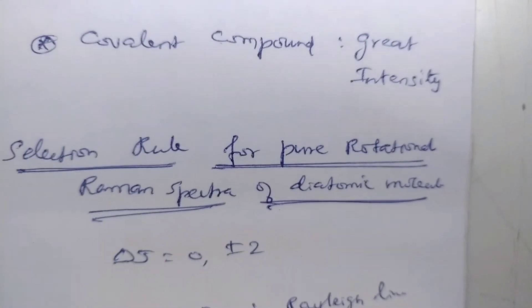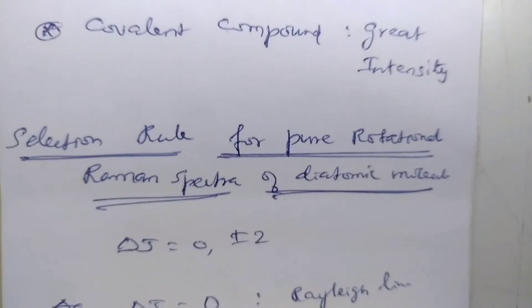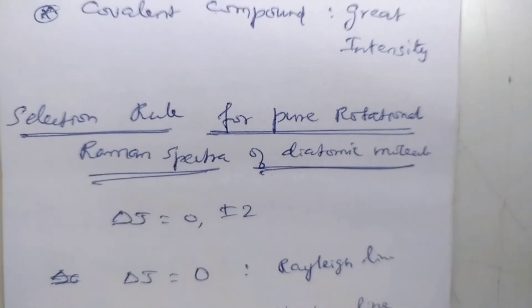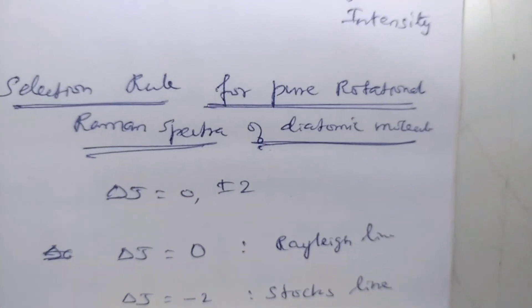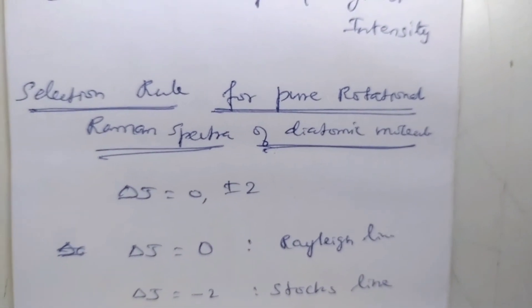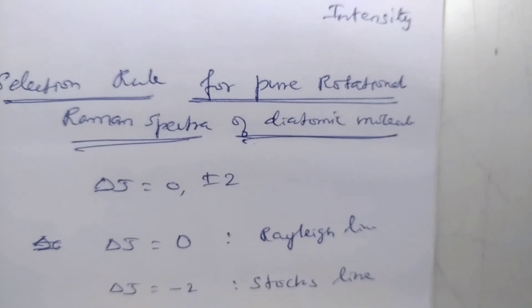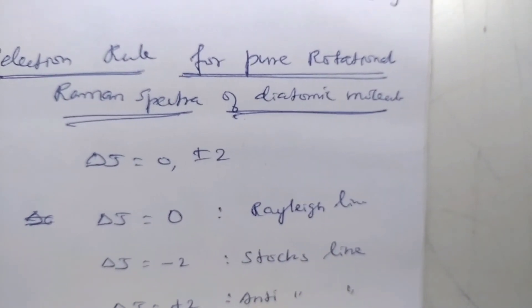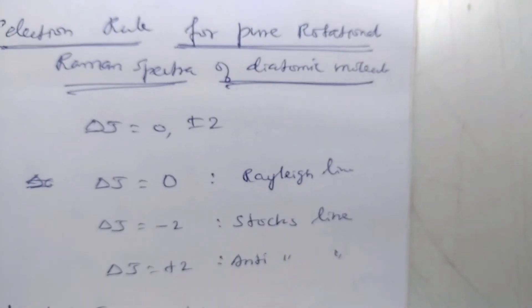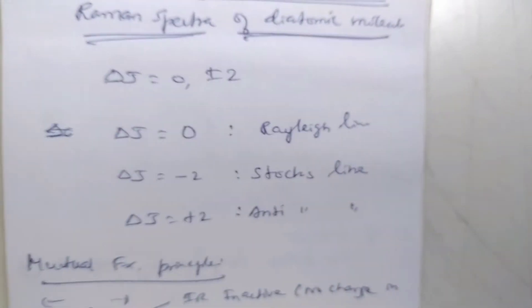Selection rule for pure rotational Raman spectra of diatomic molecules: delta J equals 0, plus or minus 2. If delta J equals 0, it's Rayleigh line. Delta J equals minus 2 is Stokes line. Delta J equals plus 2 is anti-Stokes line.